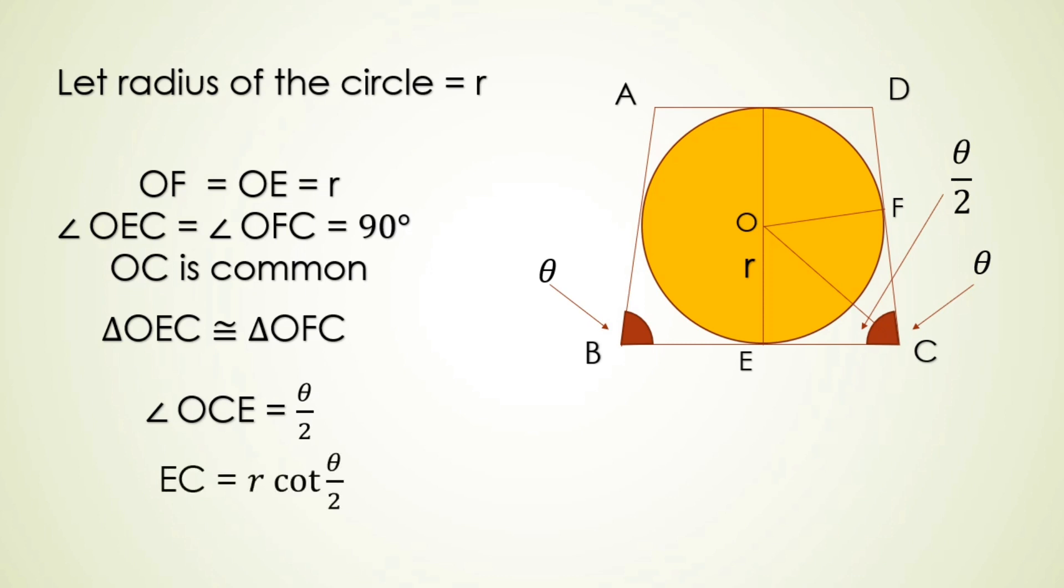And since BC is twice of EC then BC is equal to 2r cot theta by 2 and AD is equal to 2r tan theta by 2 in the similar way.